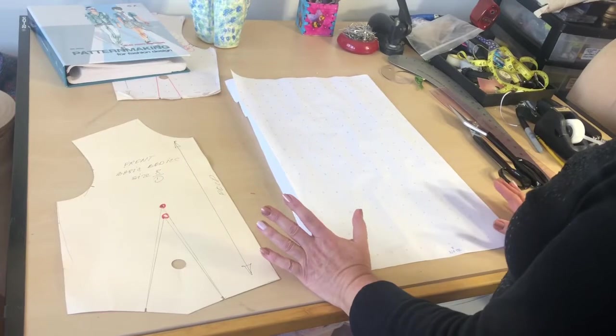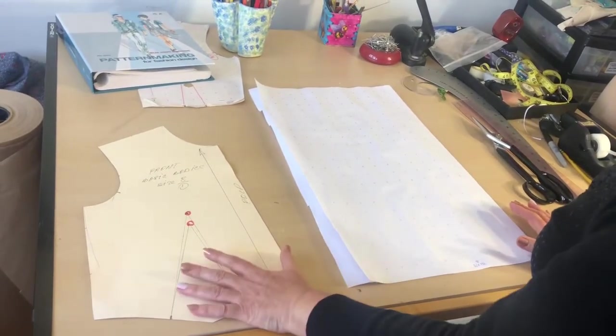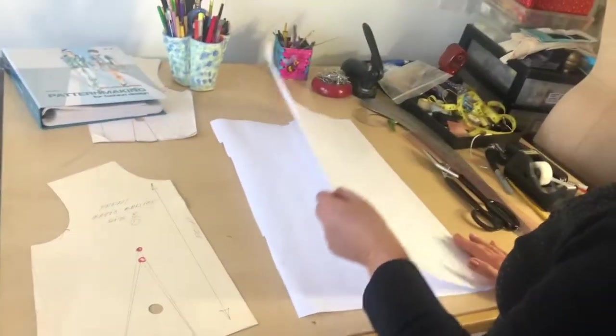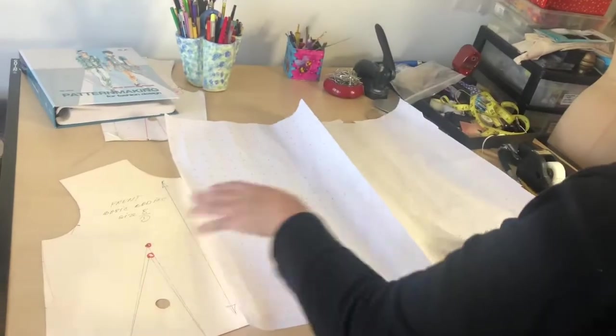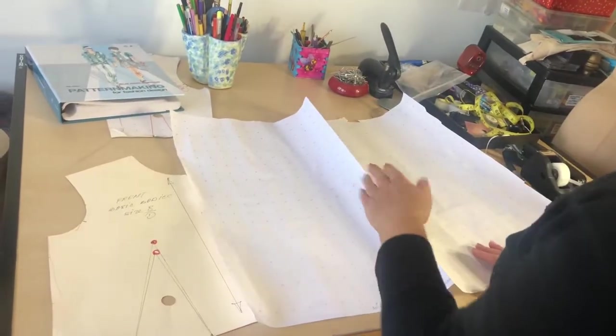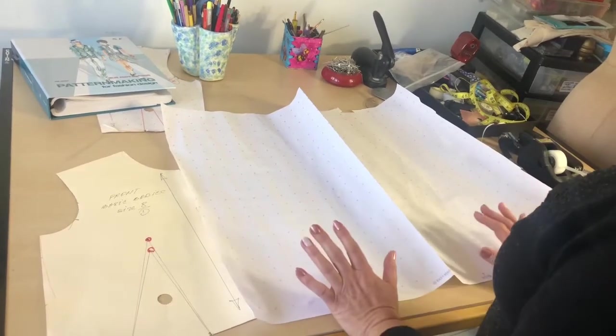In order for us to do asymmetric designs we need to copy our block on an unfolded piece of paper, because instead of just designing half of it and placing unfolded fabric and cutting, we need to develop both sides of the pattern.